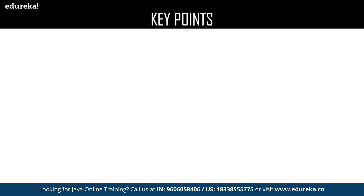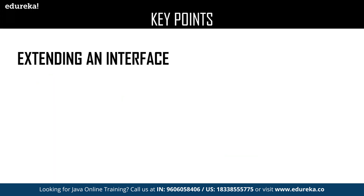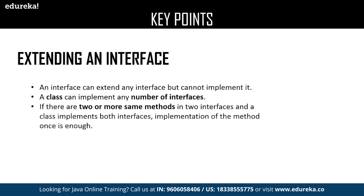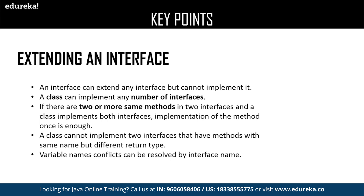Let us move on to the next key point: extending an interface. An interface can extend any number of interfaces but cannot implement them, whereas a class can implement any number of interfaces. If there are two or more same methods in different interfaces, then the class can implement all the interfaces but one single method is enough to perform the operation. A class cannot implement two interfaces that have methods with the same name but different return type. The major advantage is that variable name conflicts can be easily resolved by using the interface name.